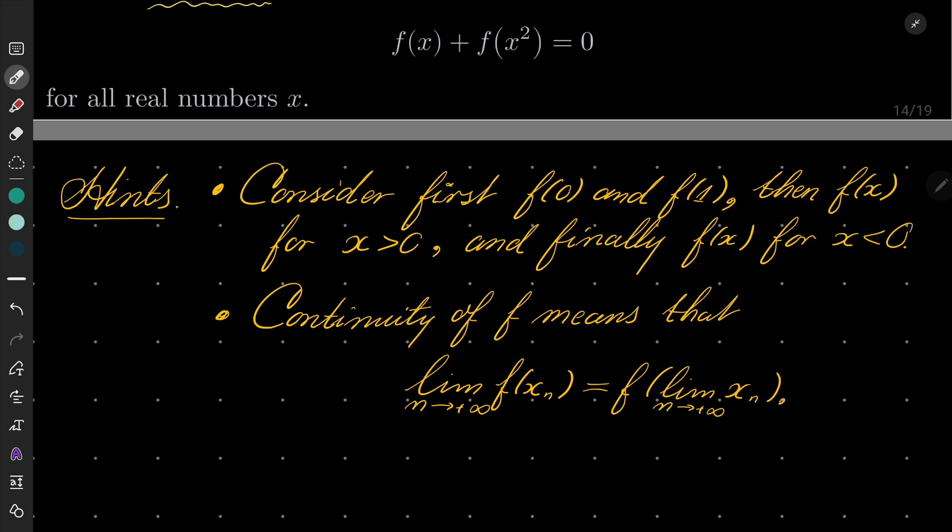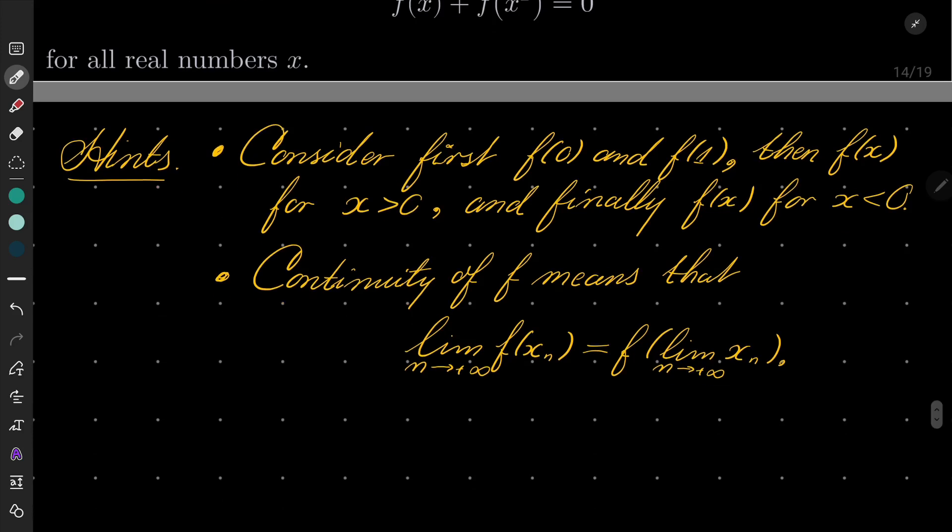So limit of f of x_n equals f of the limit as n goes to infinity of x_n. And maybe one more hint, one last hint. Notice also that the nth root of x goes to 1 as n goes to infinity if x is any positive number. This fact may also be helpful. So give this problem a try and I will see you in a minute.